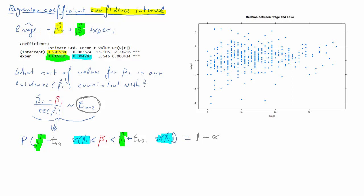To know exactly what that factor should be, we also need to know what the probability for our confidence interval should be — that's 1 minus alpha. Then we need the alpha over 2 value from the t-distribution. We'll see how this works in just a second.